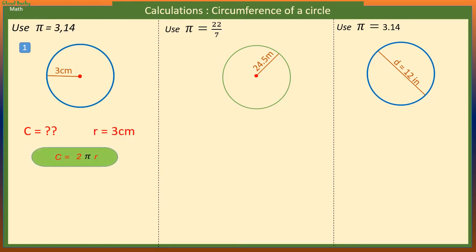We know that C is equal to 2πr, so we have 2 times π times radius. 2 times 3 centimeters will give us 6 centimeters times π. That means the circumference of the circle is 6π. If we take π to be equal to 3.14, we get 18.84 centimeters.